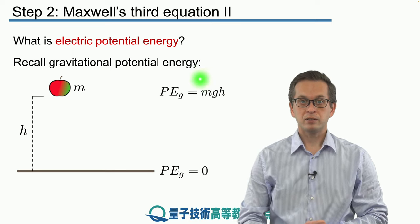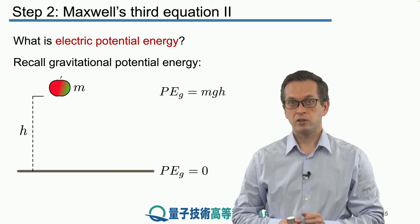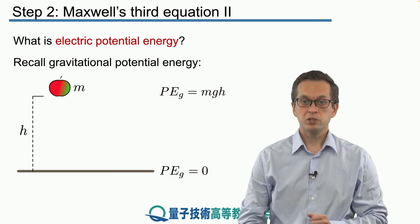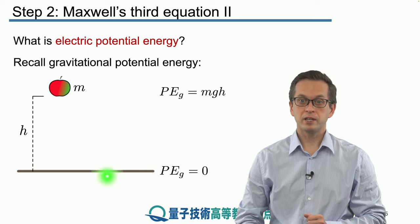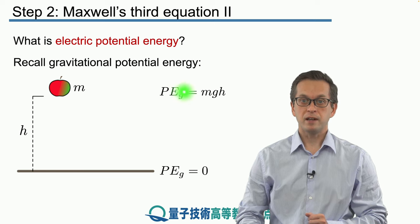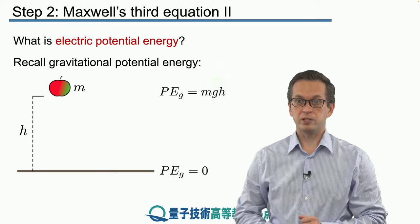Now, the thing about potential energy is that it can have any value depending on where you define your origin. Usually it makes sense to define the origin to be the surface of the Earth. So we call this potential energy of the object at the surface to be zero. And then when we raise it to height h, it has this following potential energy.